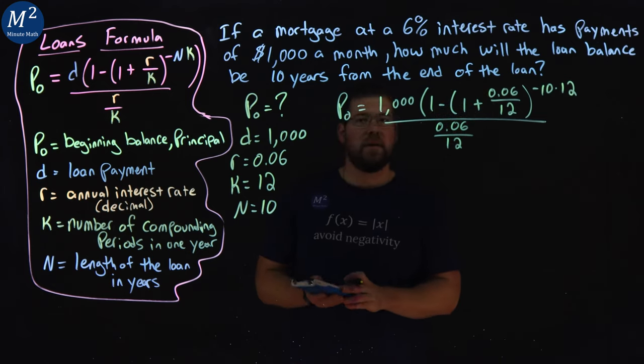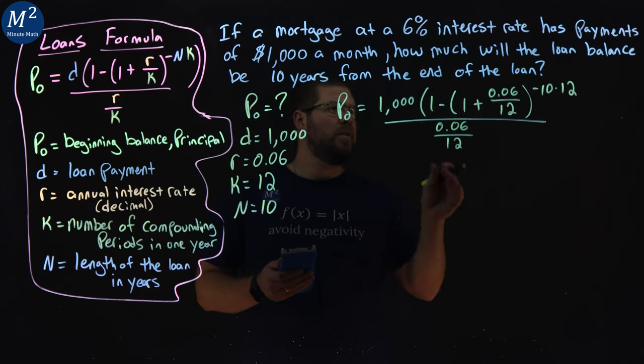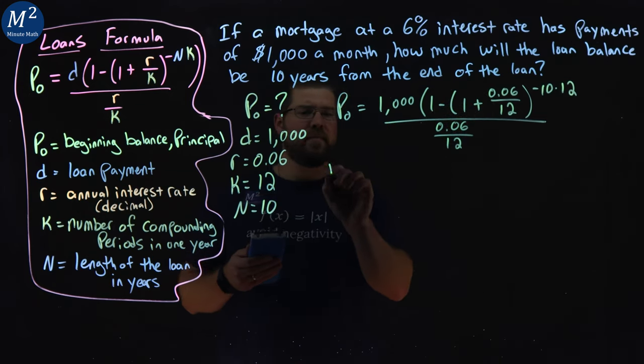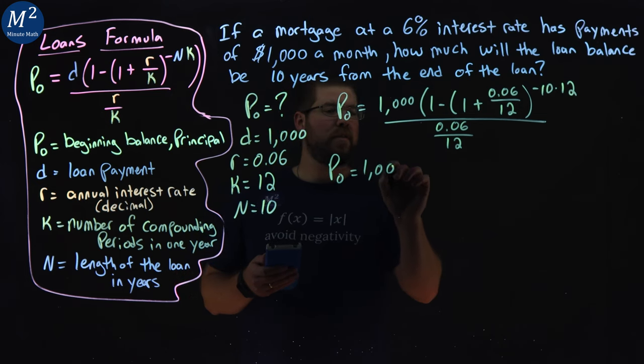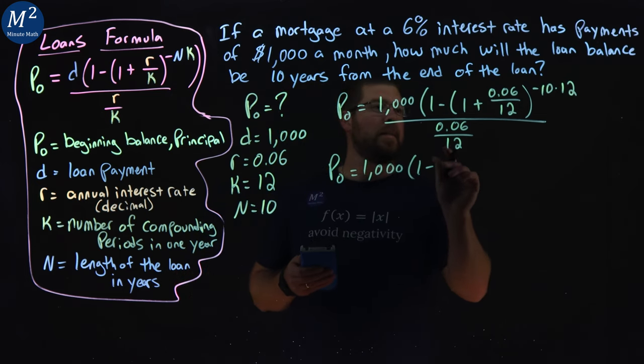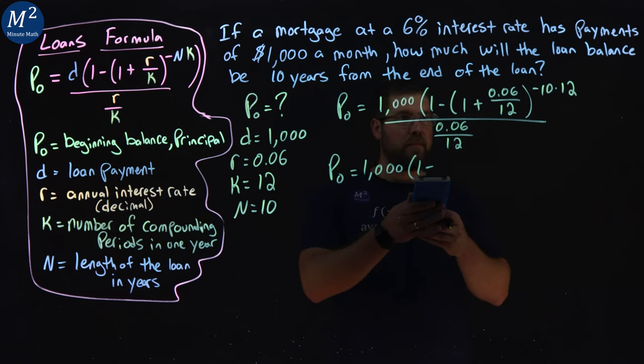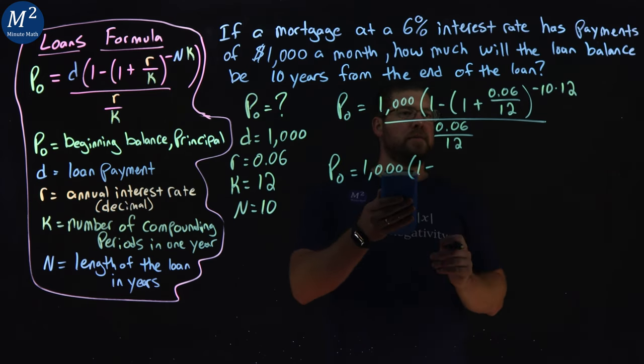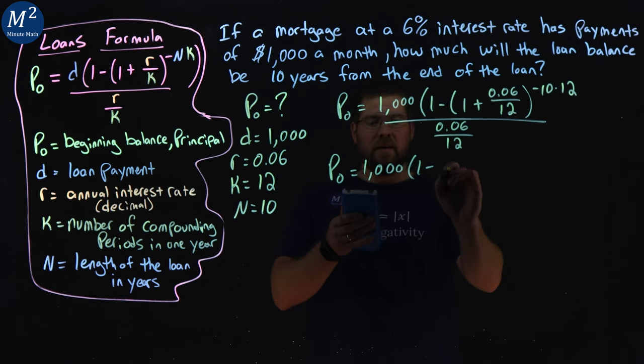Now I'm going to use my calculator here, and don't do it all at once. Break it down to little parts. We have P sub 0 equals 1,000 times 1 minus that 1, that 0.06 divided by 12 is 0.005 plus 1 is 1.005.